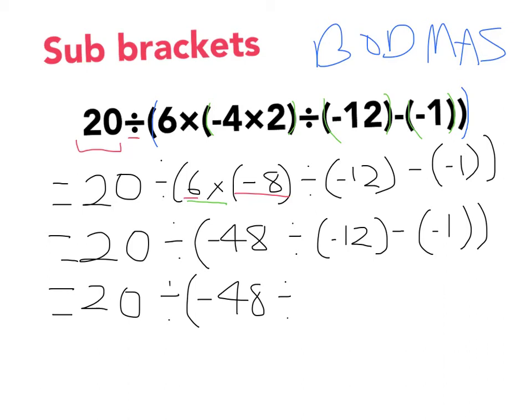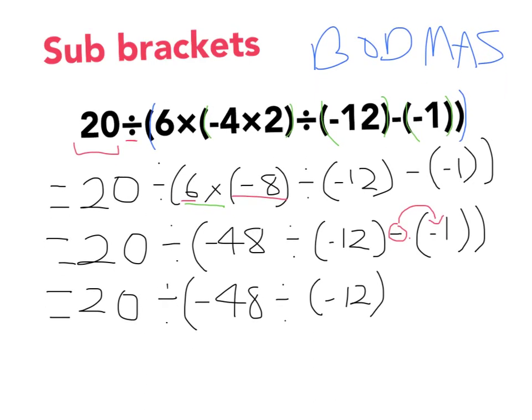20 divided by negative 48 — make sure you keep the brackets — divided by... I can't do anything with this guy yet, so negative 12. I'm going to close this. Brackets mean multiplication, and I have a negative here. I need to multiply that with whatever I've got because it's directly next to the brackets. So a negative multiplied by a negative is a positive. That becomes positive one. Then I close my brackets.